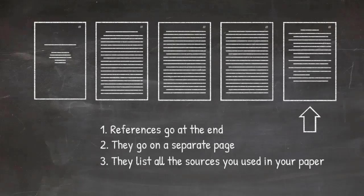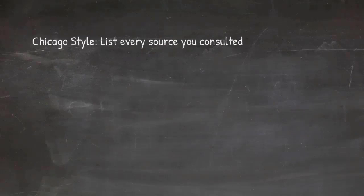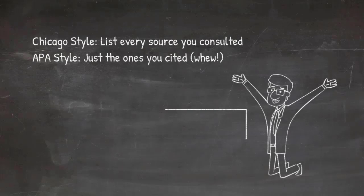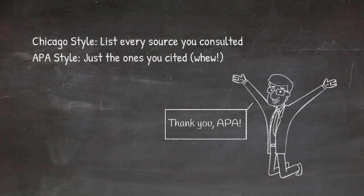This is a little bit different if you're used to some other styles, like Chicago, where you could potentially have a bibliography that includes sources you consulted but did not cite directly. APA does not ask for you to do that, so make sure you don't add sources to your reference list that are not in the text of your paper.